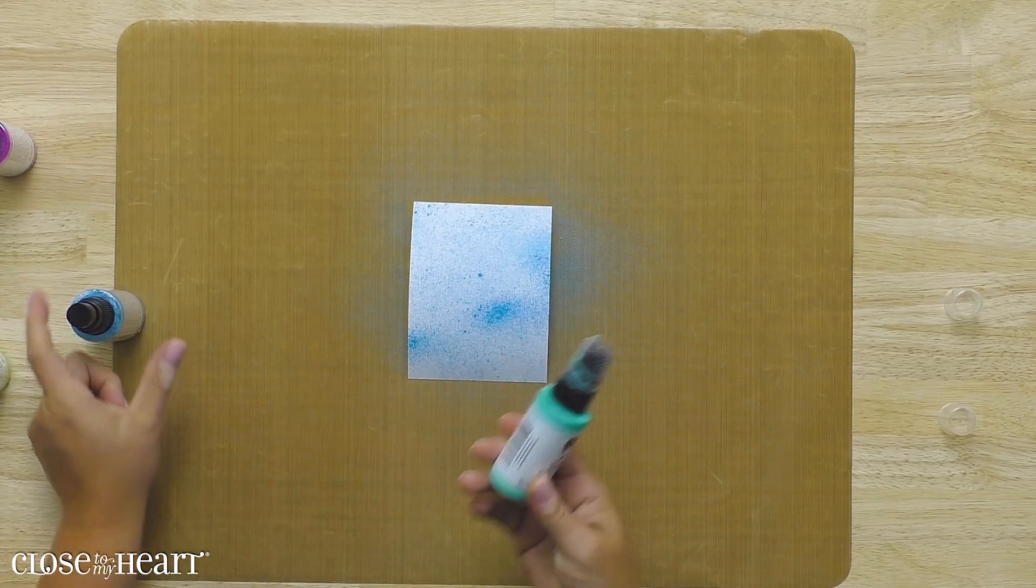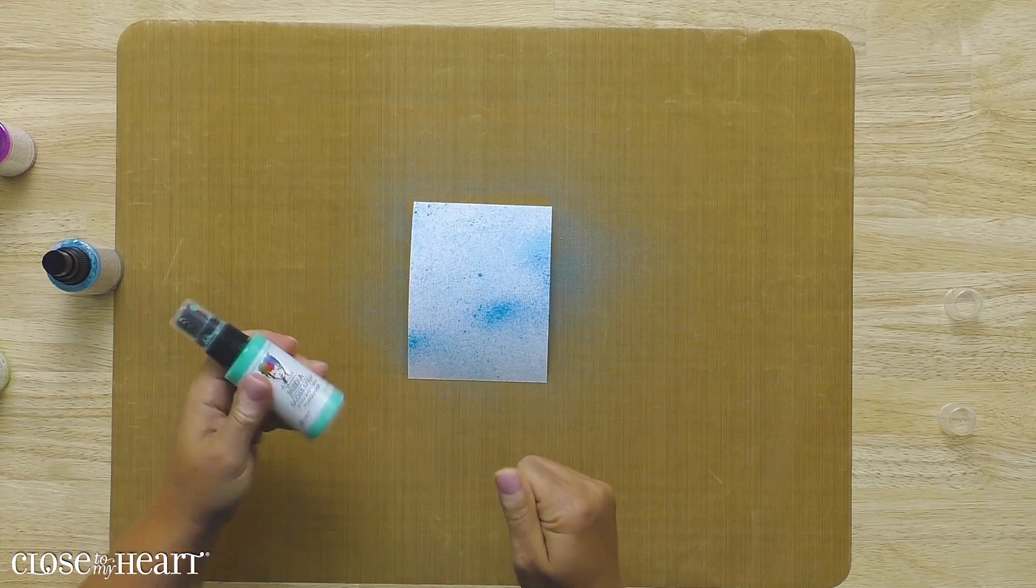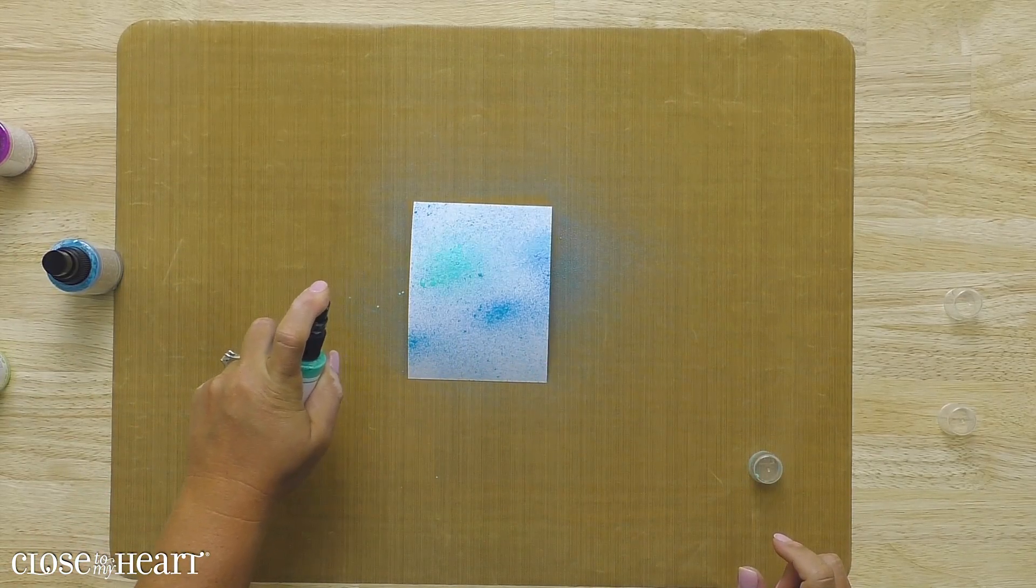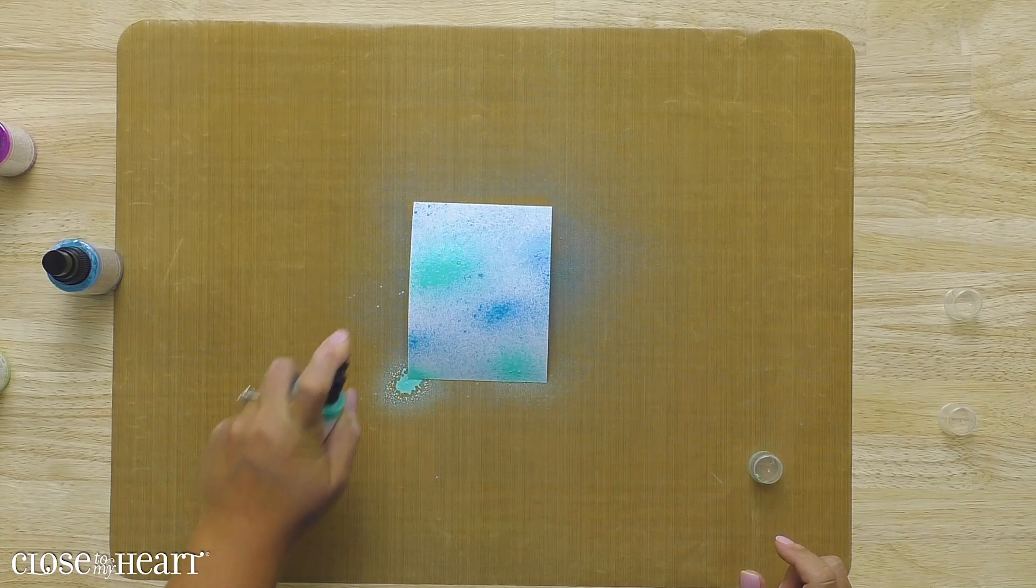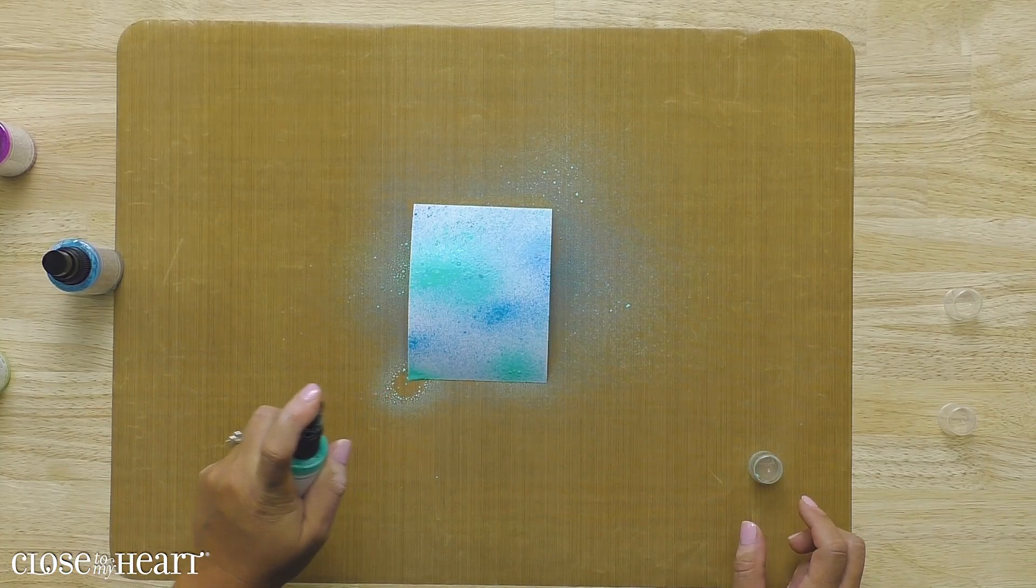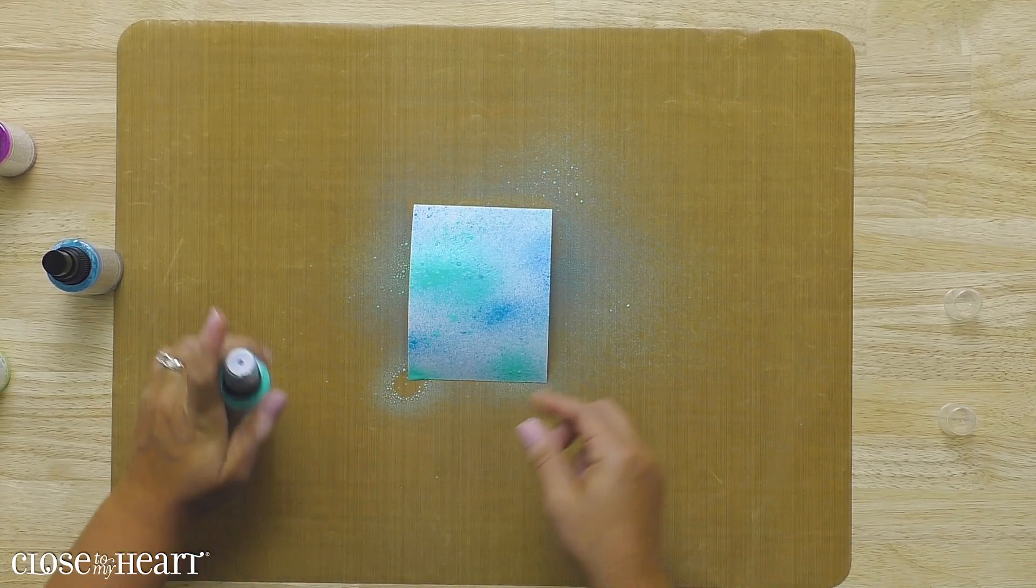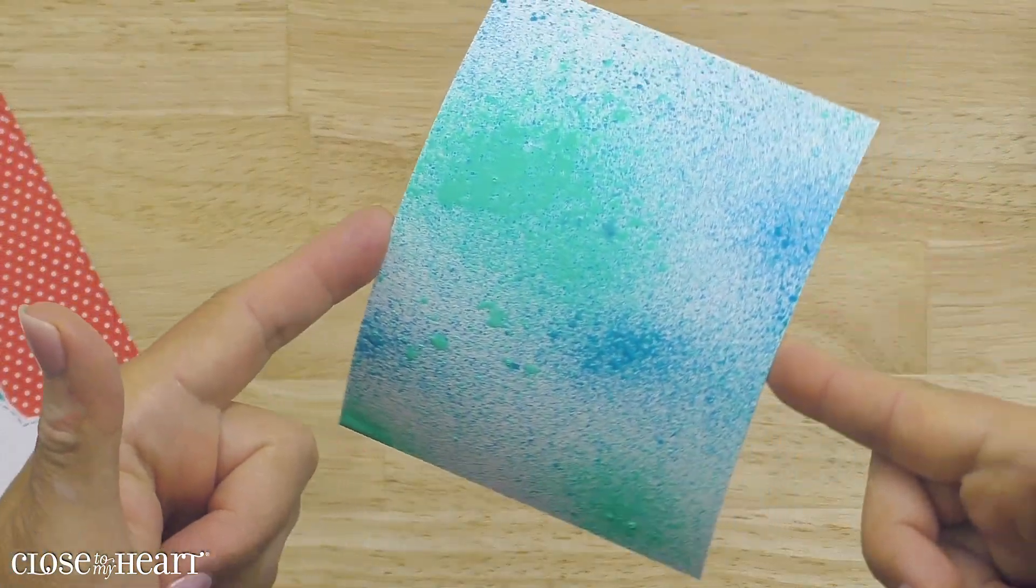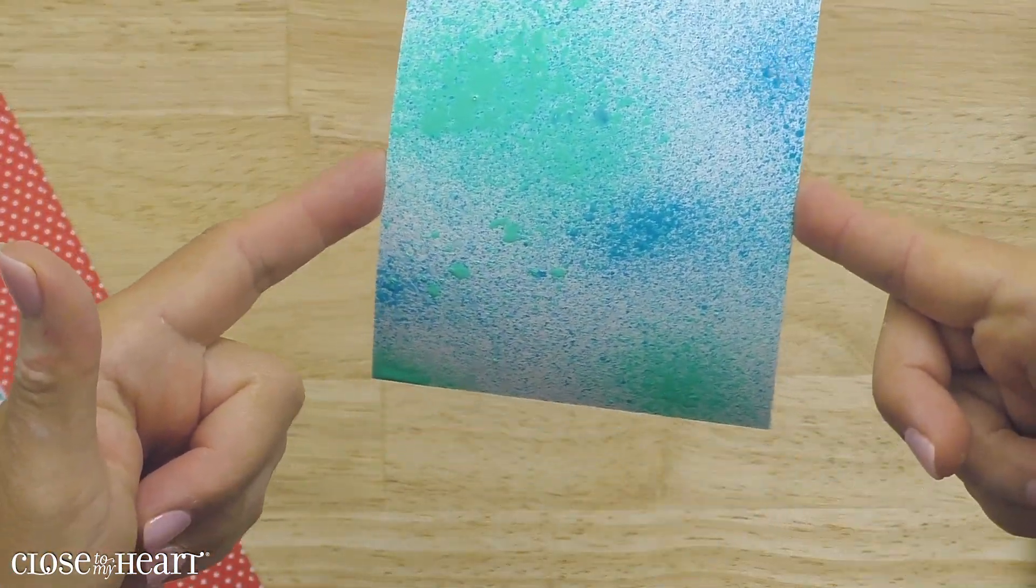And then we're going to come in with turquoise and we'll do something similar. I'm also going to kind of choose the areas where I want that color to go. So I've added just more layers and some small splatters. So you can see how that's all starting to come together.